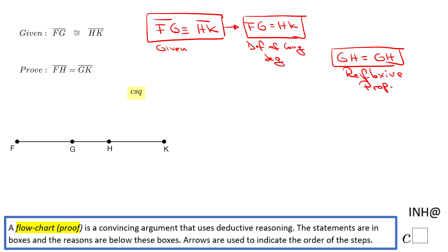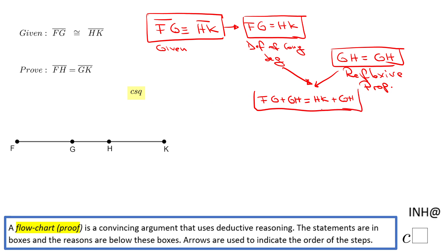Whenever you have something equal to itself, that is the reflexive property. And now, if you remember, we add things — we put these two guys together. We add, and we're going to get: FG plus GH equals HK plus GH. We add two expressions and notice we have that equal sign. This is the addition property of equality.